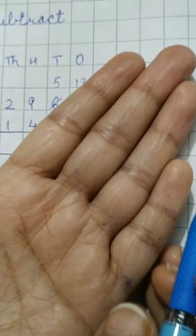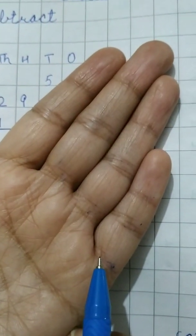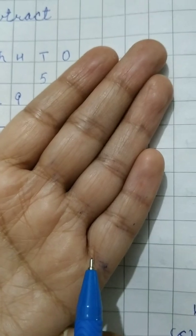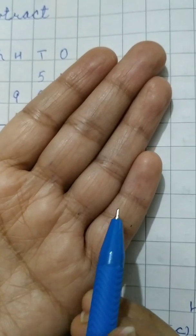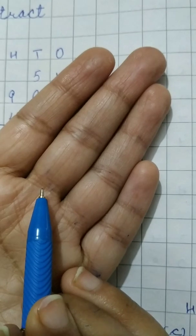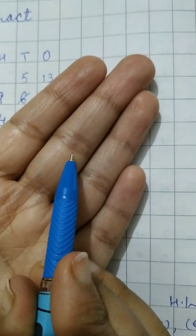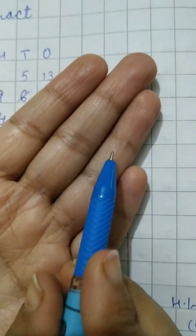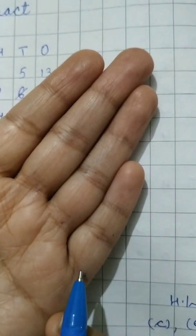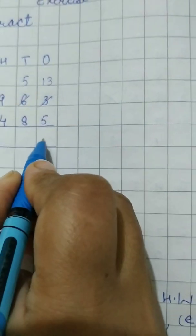So let us start counting on the fingers. We have to count from 6 to 13. 6, 7, 8, 9, 10, 11, 12, 13. Let us count all the lines now. 1, 2, 3, 4, 5, 6, 7, 8. So 13 minus 5 is 8.